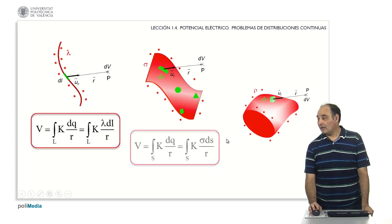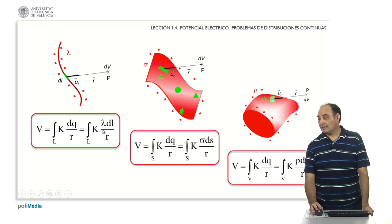The expressions were absolutely analogous, except that the integrals are of length, surface or volume, and that the charge differential is linear density per small length, surface density per small surface area, or volumetric density per small volume.